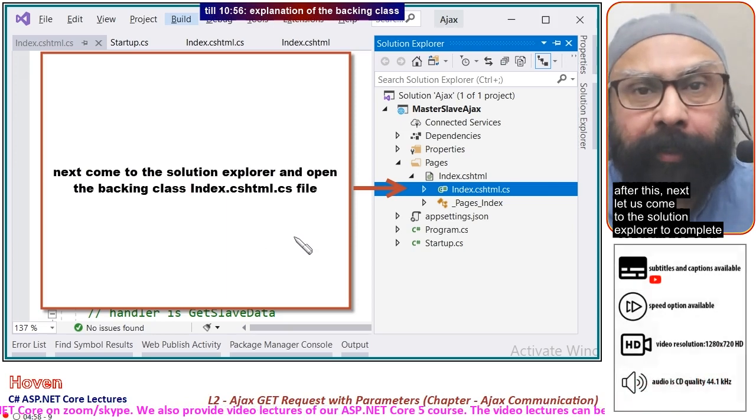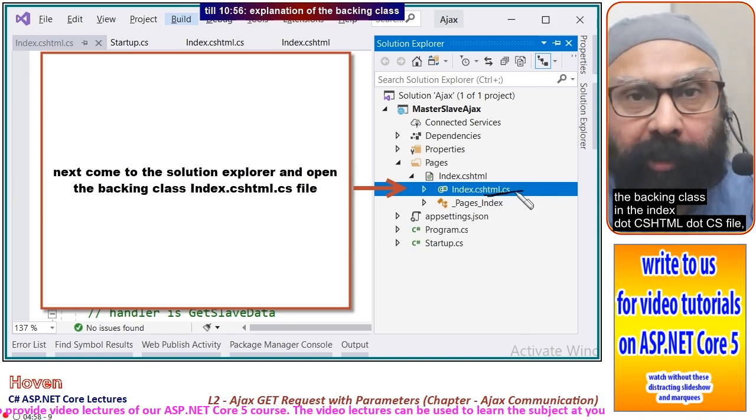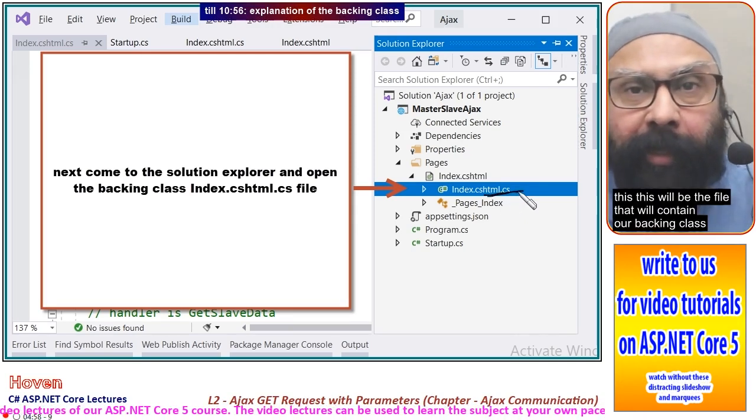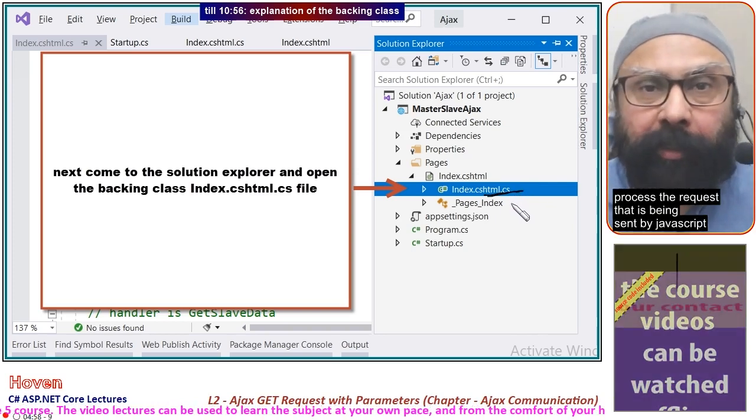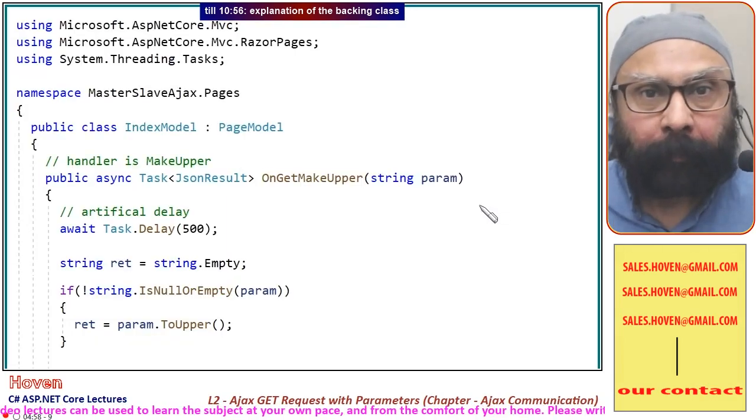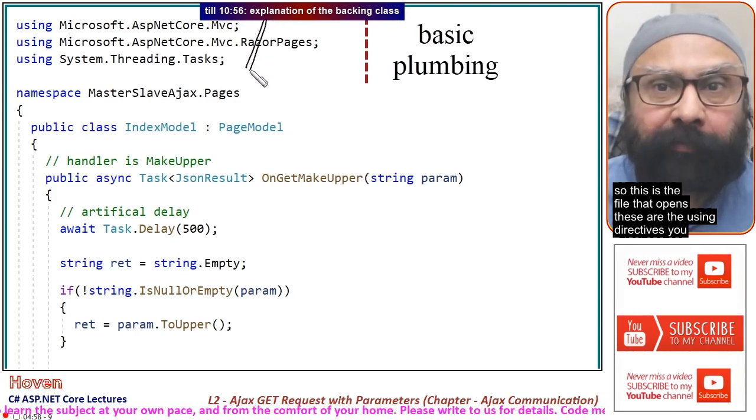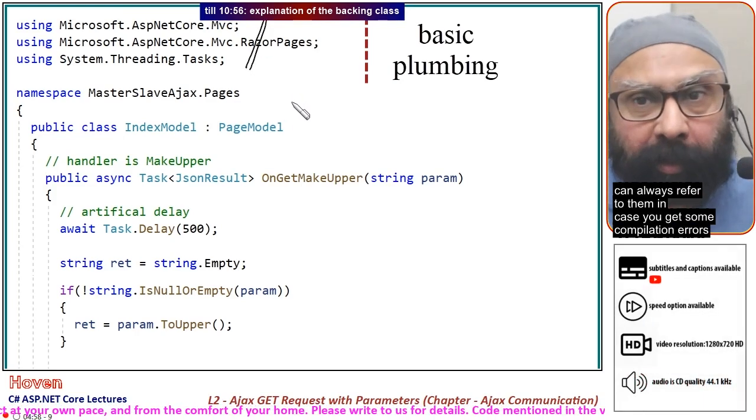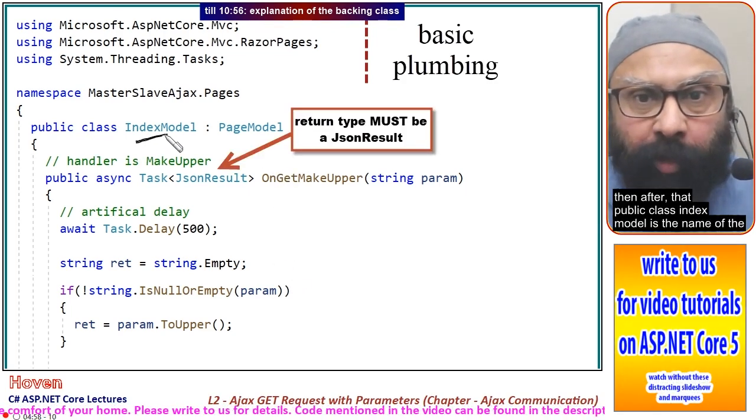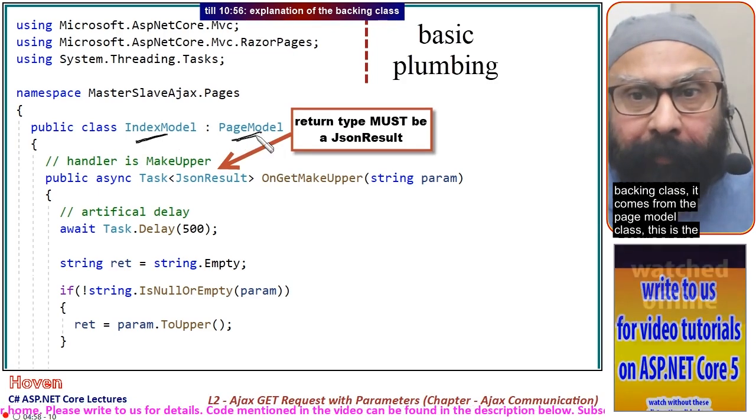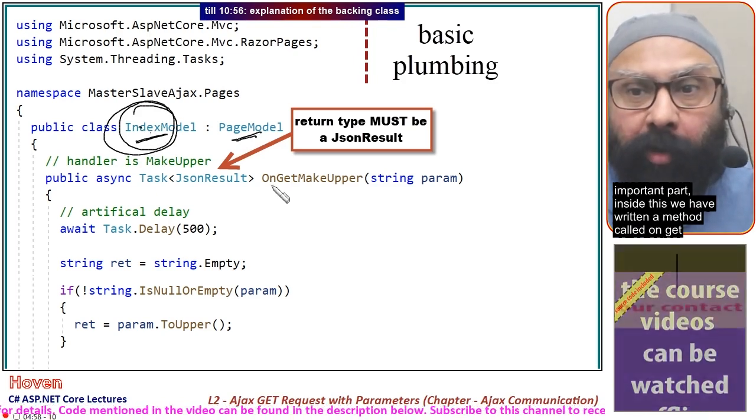Next, let's come to the solution explorer to complete the backing class in index.cshtml.cs. This file will contain our backing class and the function that will process the request being sent by JavaScript. Public class IndexModel comes from the PageModel class. Inside this we have a method called OnGetMakeupper.